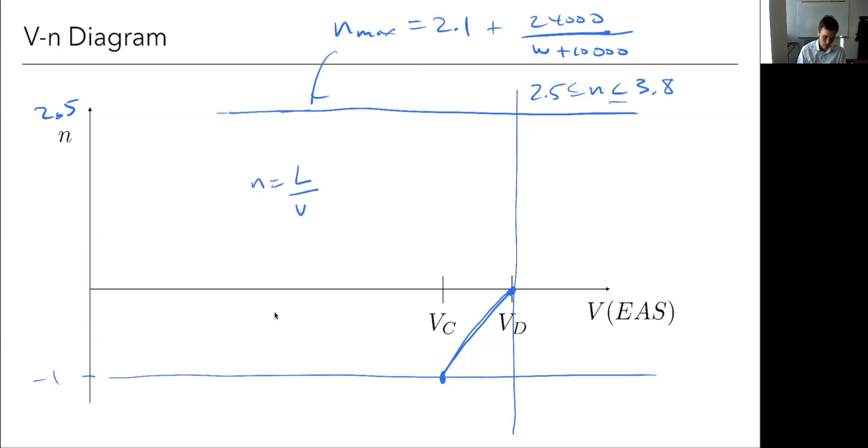n is L over W. So the maximum I can get to that's related to stall is going to be CL max times one half rho V squared times my reference area, divided by the weight. And this formula, because I'm not doing true airspeed, which this is in terms of, I'm going to do it in terms of equivalent airspeed. So I'm going to swap out my dynamic pressure for the equivalent dynamic pressure. So rho at sea level and then equivalent airspeed squared. So rho at sea level is a constant, weight's a constant, S is a constant, CL max is constant.